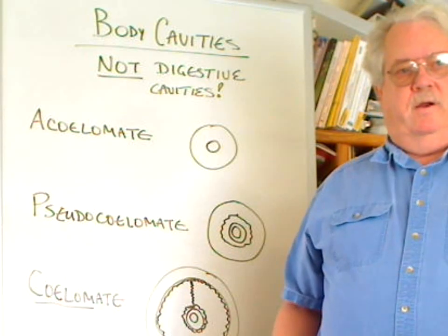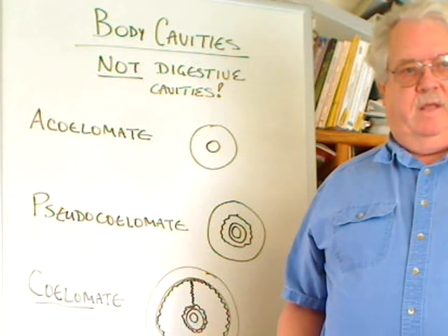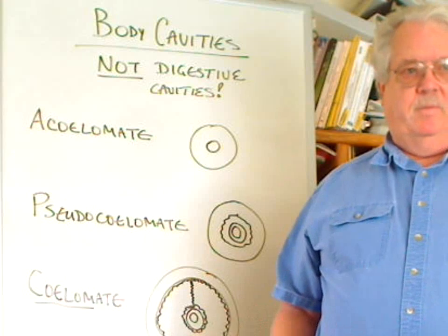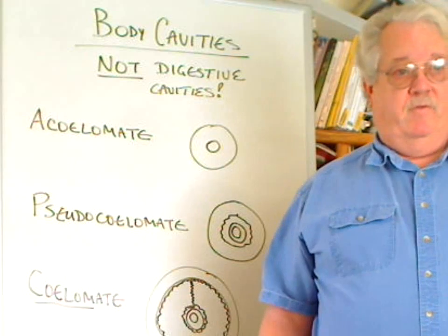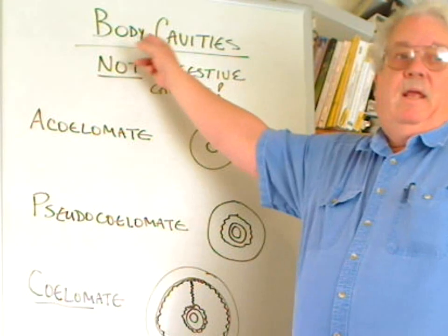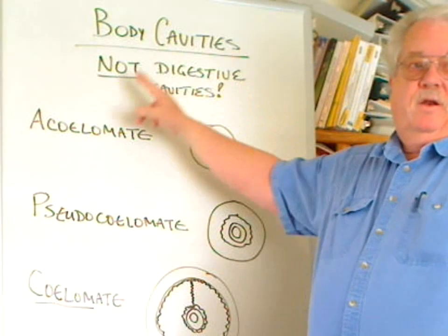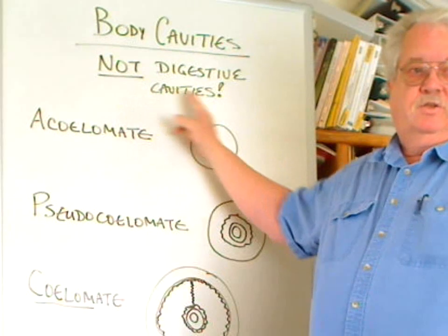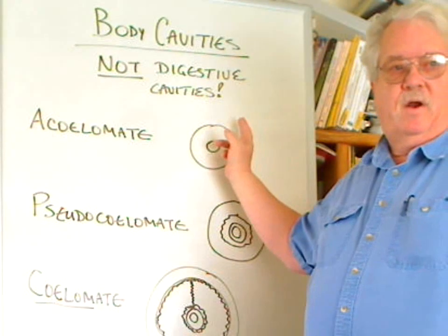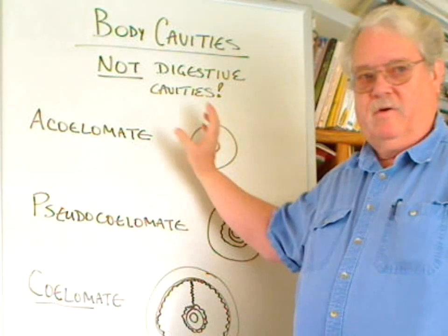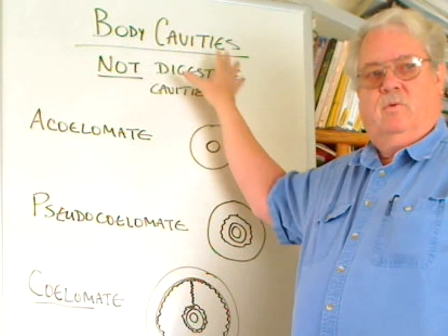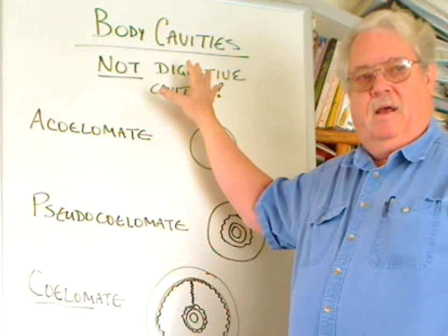The next major characteristic of the animal phyla that people get confused about are body cavities. Notice these are body cavities — not digestive cavities, digestive tracts, intestinal tracts, etc. Those have nothing to do with what we call a body cavity.